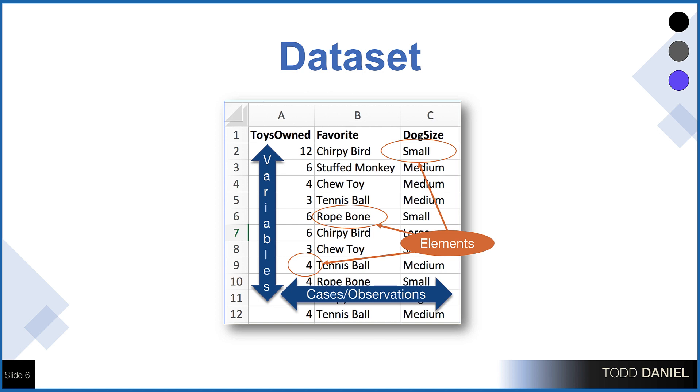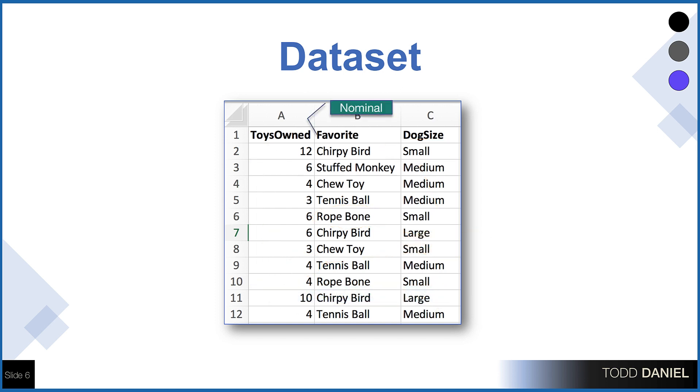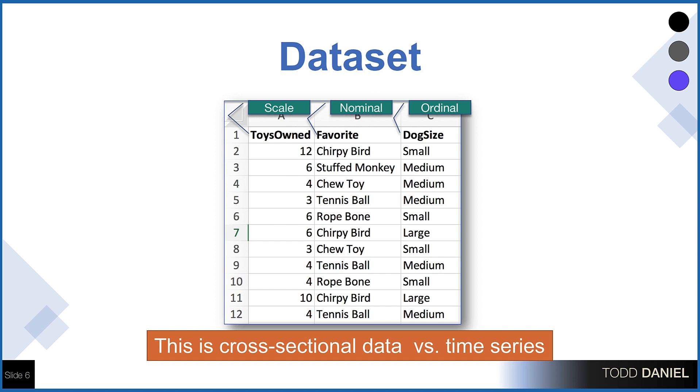So with three variables and 11 observations, we have 33 elements in this dataset. Now additionally, we can consider the levels of measurement for these variables. Favorite toy is a nominal variable. The types of toys are categories, but they have no underlying order. Dog size is an ordinal variable. The dogs are classified as small, medium, and large. There is an underlying order to those data. And finally, the number of toys owned is a scale variable. Because a dog could not own a negative number of toys, there is a meaningful zero, and it would specifically be ratio level data.